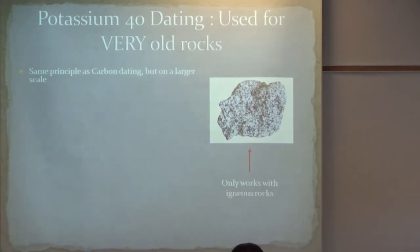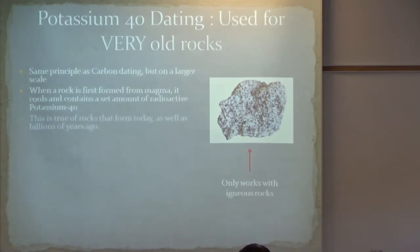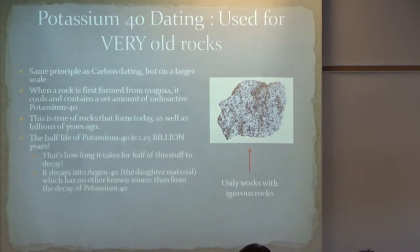So it's the same principle of carbon dating. It's just on larger timescales. So when a rock first solidifies from magma, it cools. It solidifies. It contains a set amount of potassium-40. It's locked into place. This is true of rocks that formed today. It's true of rocks that formed billions of years ago. So the half-life of potassium-40 is 1.25 billion years. That's how long it takes for half of the potassium-40 in a rock to decay. And it decays into argon-40. And this process, the decay of potassium-40 to argon-40, is the only way we know of that argon-40 can form.